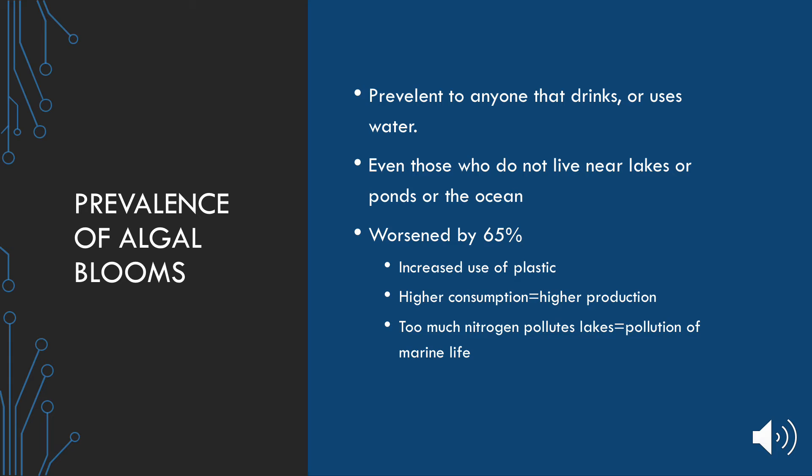Regarding the prevalence of algal blooms: anyone who drinks or uses water is at risk, and no one can say that's not them. Everyone drinks water, everyone uses water — we shower, we wash our hands, we drink water. So even if we don't live near a lake, pond, or ocean, we're still affected because nutrients diffuse and the entire world can be polluted. Since around 2017, algal blooms have worsened by 65%, and they are at an all-time high when it comes to polluting water.